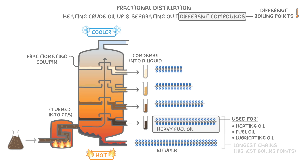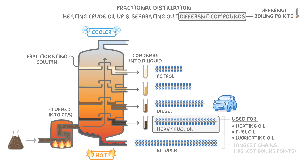The shorter chain hydrocarbons, though, have much lower boiling points, so they'll stay as a gas for much longer as they rise up the column until they finally reach a cool enough temperature that they condense into a liquid. This gives us fuels like diesel and petrol, which we use in cars and other road vehicles, and kerosene, which is used in jet engines.